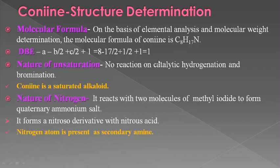Regarding the nature of unsaturation in conine: conine gave no reaction on catalytic hydrogenation and bromination. These two reactions lead to the important conclusion that conine is a saturated alkaloid and does not contain an olefinic double bond. This means the double bond equivalence of 1 should be in the form of a cyclic ring.